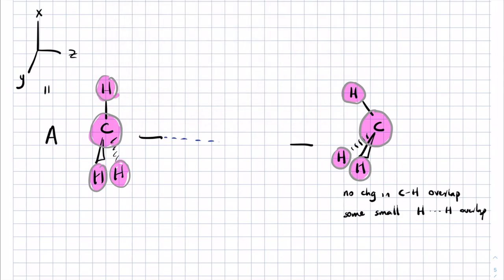Going down in energy means more stable — and why is it more stable? Because the hydrogens are overlapping in phase, which is a favorable stabilizing effect. It's not a large effect but it's a decent-sized one.